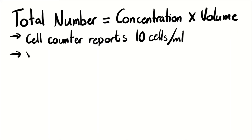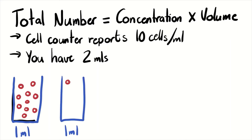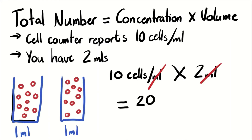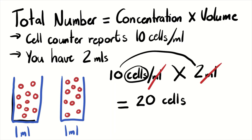This number comes from the concentration you have multiplied by the volume you have. So if the cell counter reports 10 cells per mil and you have 2 mils, then the total number is 10 cells per mil multiplied by 2 mils. Keeping with good algebra, we use our units — the mils cancel out, leaving 10 cells × 2, which gives us 20 cells total.